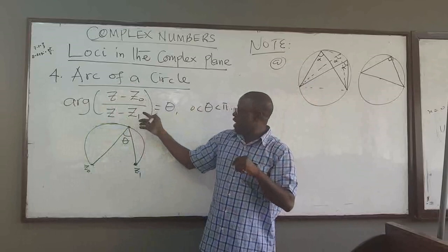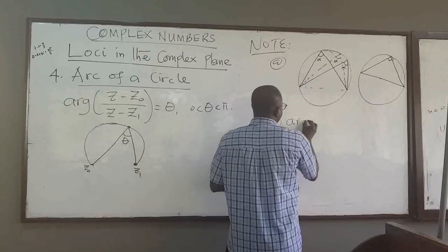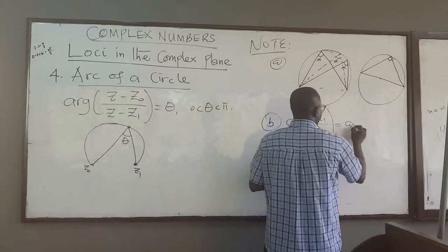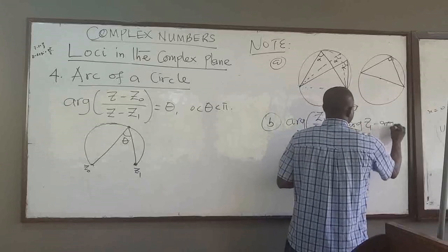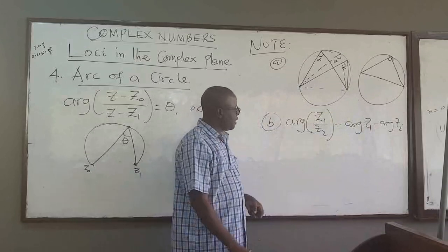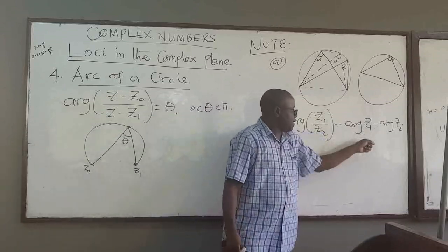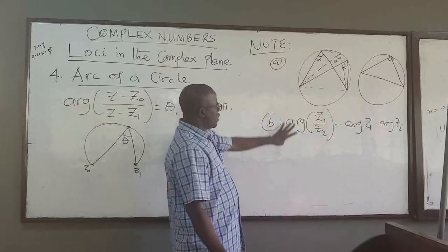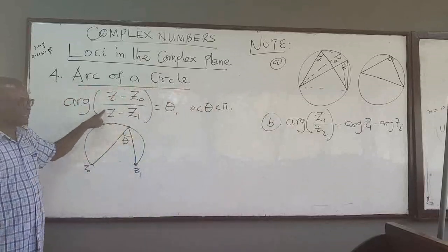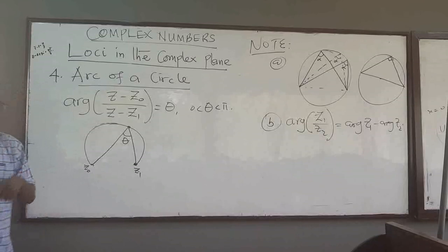The second fact we will use is that we already showed the argument of z₁ over z₂ equals the argument of z₁ minus the argument of z₂. This can be proved easily using the exponential form of a complex number — when you divide them, the arguments subtract. In the next video, we will use these two facts to show that the equation arg((z minus z naught)/(z minus z₁)) equals theta actually represents an arc of a circle.